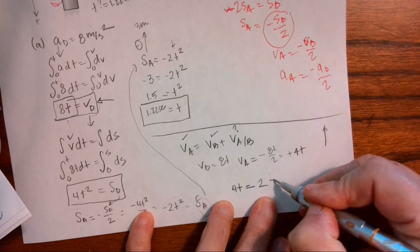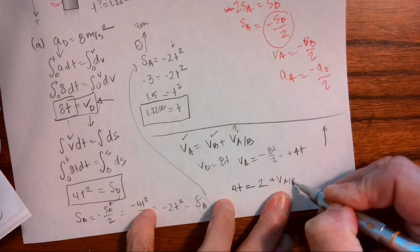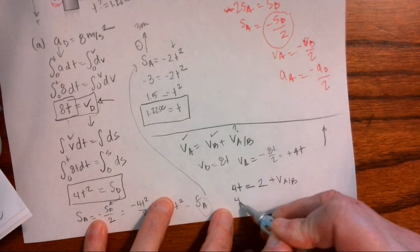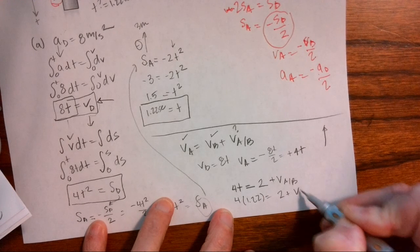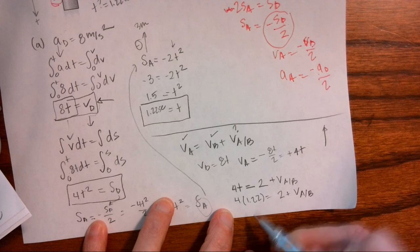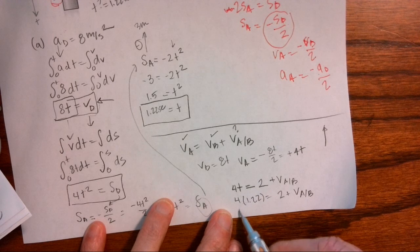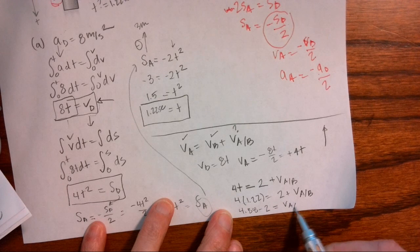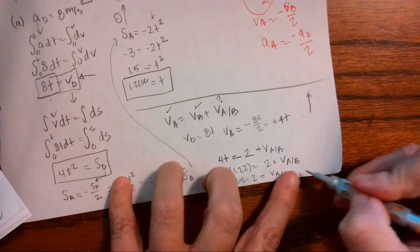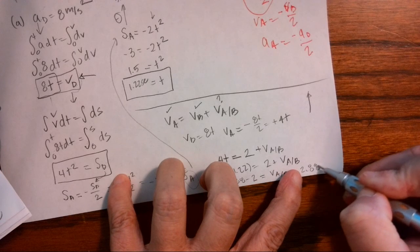Plus velocity relative A to B. So four times 1.22 equals two plus velocity A relative to B. We multiply this out 4.88 minus two equals the velocity of A relative to B equals 2.88 meters per second. And that's the answer.